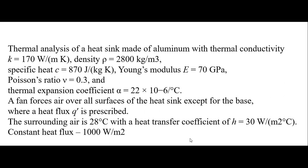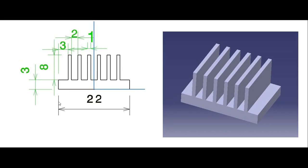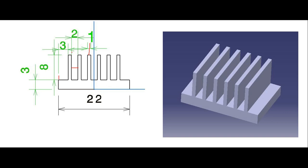Let me show you the heatsink dimensions. This is the type of heatsink we typically see in electronic gadgets or CPUs. The total distance is 22 mm. The height from 0 to 3 mm is the initial base height, and the horizontal dimension is also 3 mm. The height of each fin is 8 mm, and each fin width is 1 mm. The distance between two fins is 2 mm.